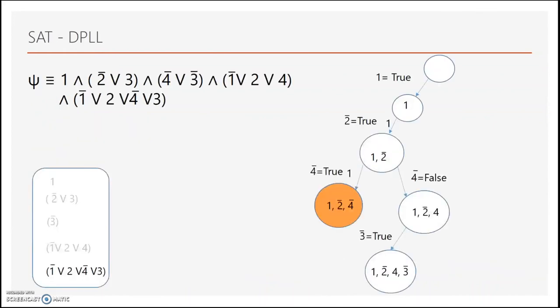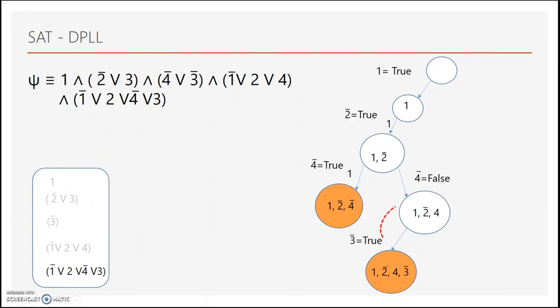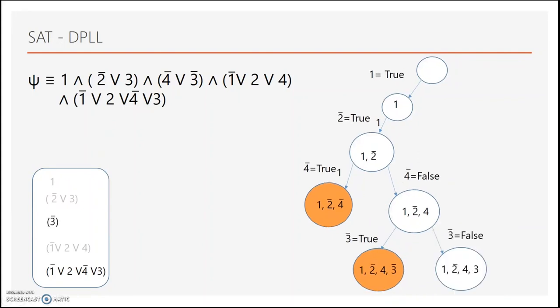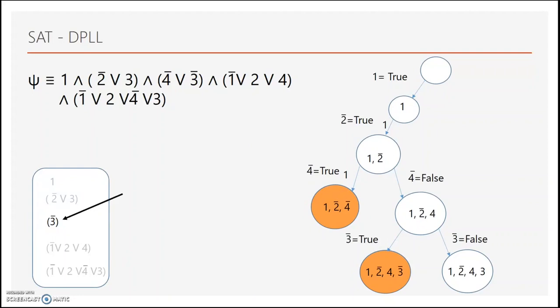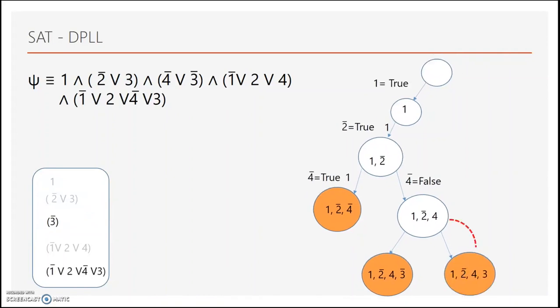And we add negation of conjunction of literals in the model to the original formula. Now, since our old model does not satisfy the new formula, we backtrack. We now set 3 bar to false. Setting 3 bar to false makes one of the clauses true and removes it from the formula. Now, we also remove the literal 3 bar from one of the clauses and this makes that clause empty. Since this formula is now unsat, we backtrack. At this point we have explored all the possible values for 3 so we backtrack again. At this point we have explored all the possible values for 4 and we backtrack again.